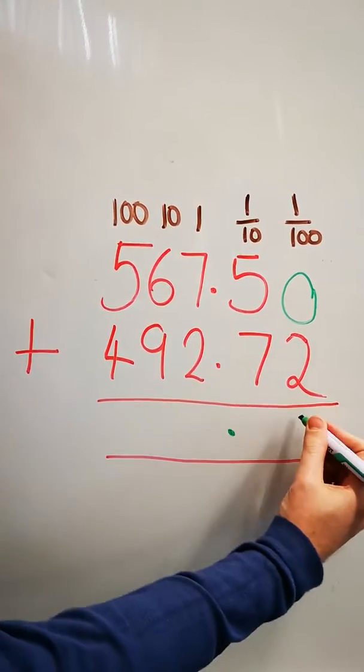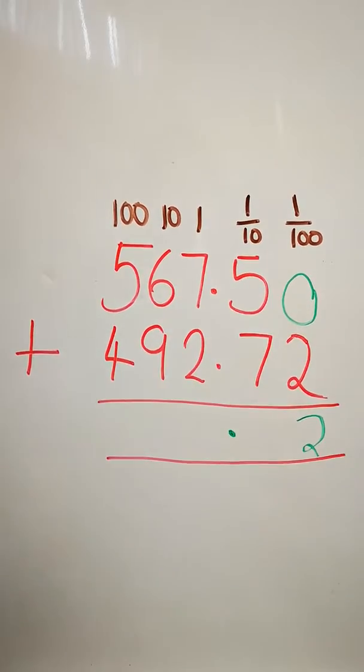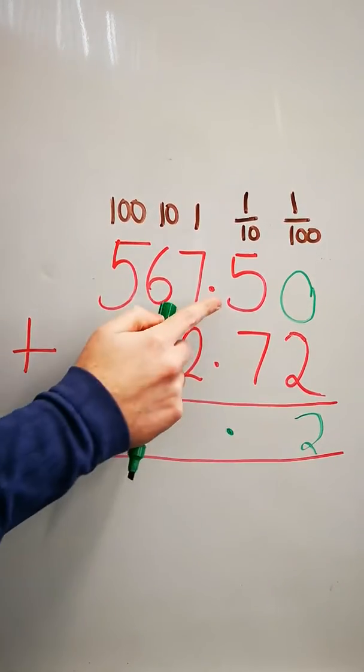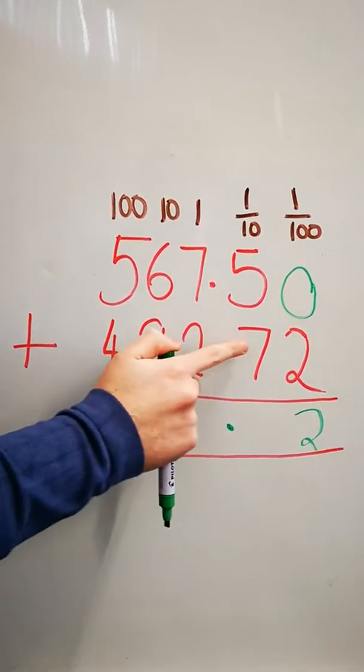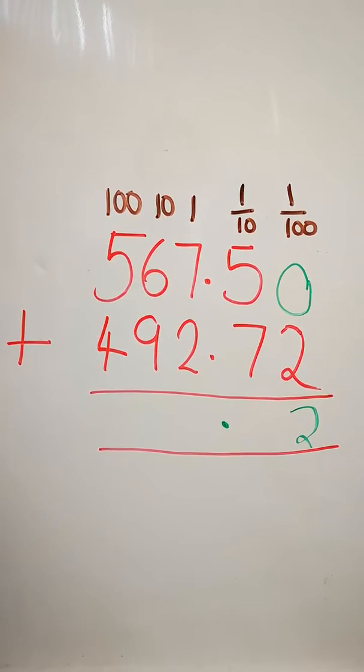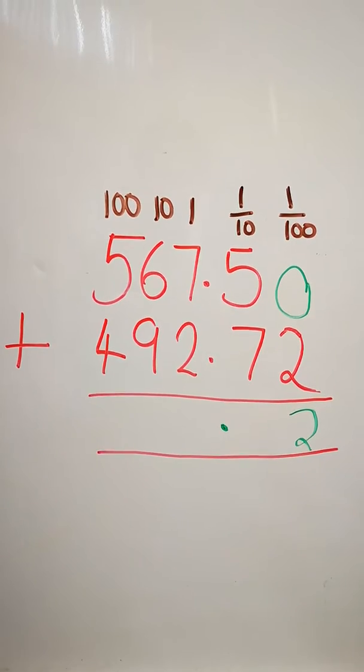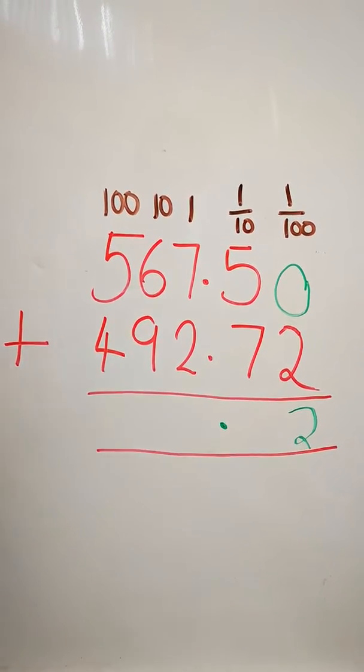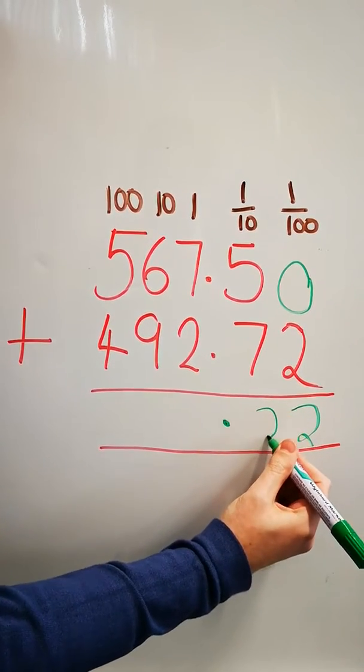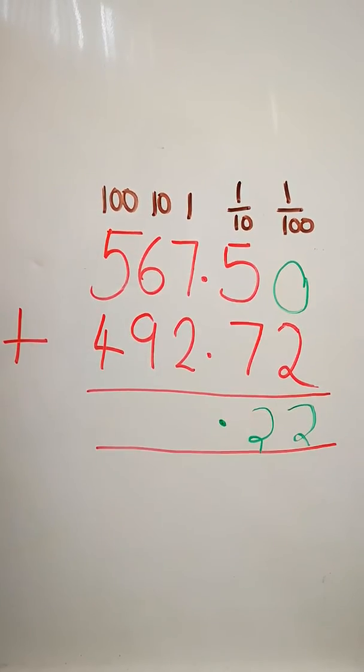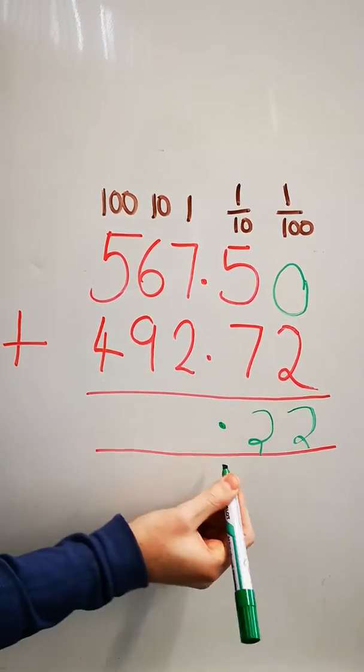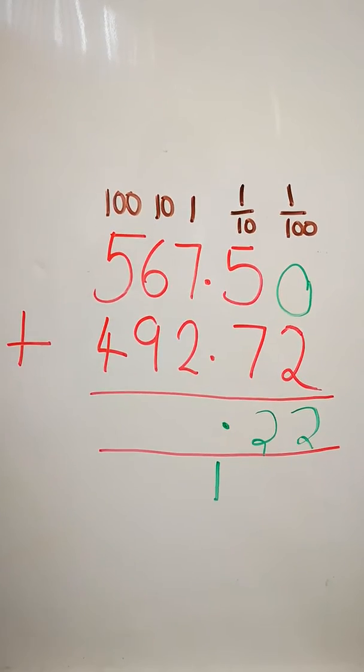Zero add two hundredths is two hundredths. If I add five tenths to seven tenths, that gives me twelve tenths. Obviously, I know I can only have a maximum of ten tenths. So that will go there. And I'll carry that one tenth, which is now one whole, over to underneath the one section.